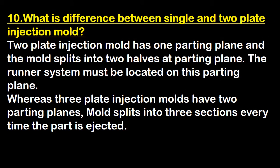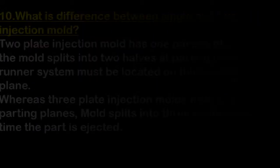What is the difference between single and two plate injection mold? A two plate injection mold has one parting plane and the mold splits into two halves at the parting plane; the runner system must be located on this parting plane. Whereas a three plate injection mold has two parting planes, and the mold splits into three sections every time the part is ejected.